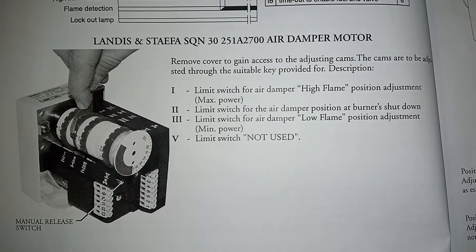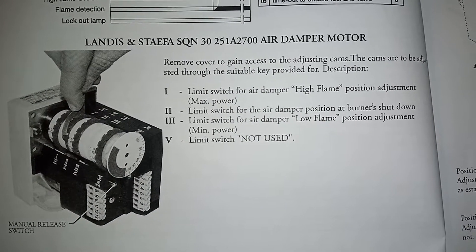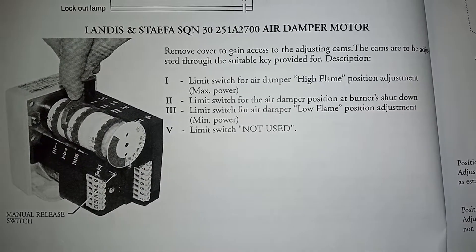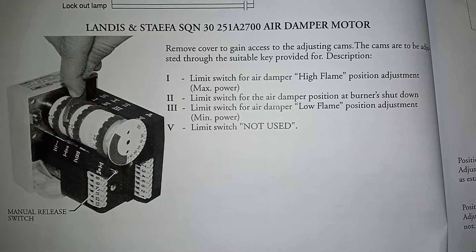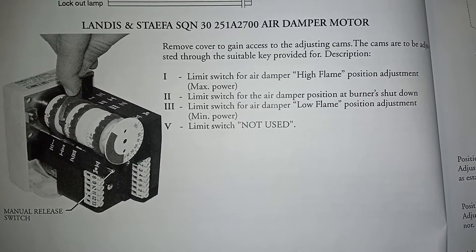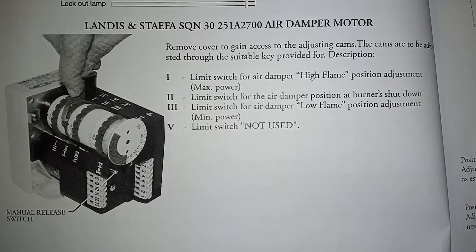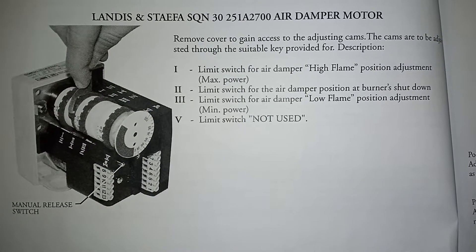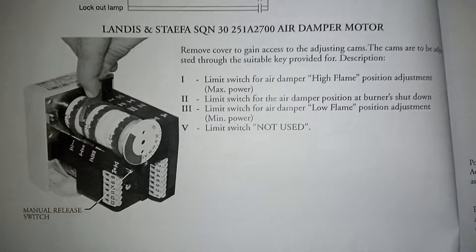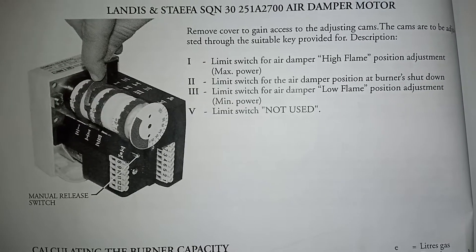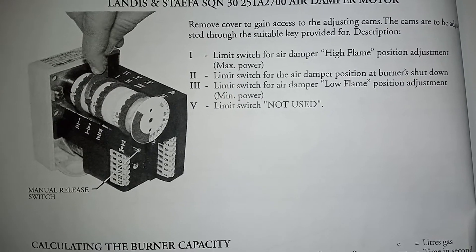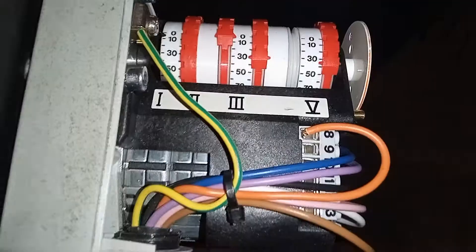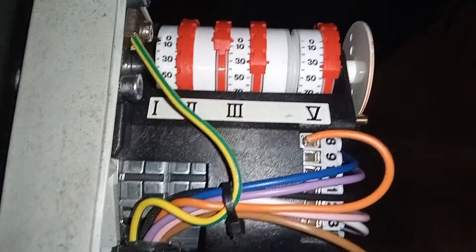Stage 1: limit switch for air damper high fire position adjustment. Stage 2: limit switch for the air damper position at burner shutdowns. Stage 3: limit switch for air damper low flame position adjustment. And then Stage 4: limit switch not used. And here we have it in real life.